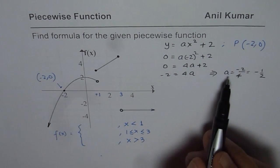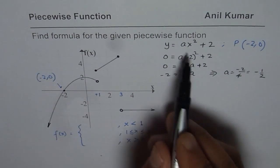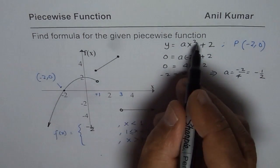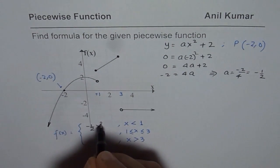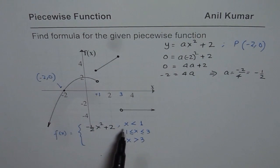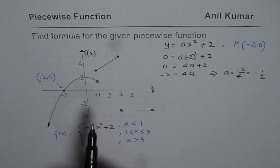Now that is the value of a minus half and therefore, we get the function as minus half x square plus 2. You get the idea, x square plus 2 and this piece extends on the left side of 1, not including the value of 1.